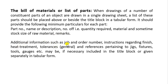Additional information such as job and order number, instructions regarding finish, heat treatment, tolerance for particular elements or diameters will be written in the bill of material box. References pertaining to jigs, fixtures, tools, and gauges may be included in the title block or given separately in the tabular form.